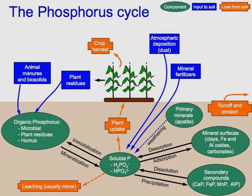On the land, phosphorus gradually becomes less available to plants over thousands of years, since it is slowly lost in runoff. Low concentration of phosphorus in soils reduces plant growth and slows soil microbial growth, as shown in studies of soil microbial biomass. Soil microorganisms act as both sinks and sources of available phosphorus in the biogeochemical cycle.